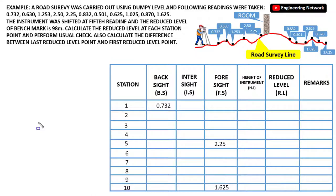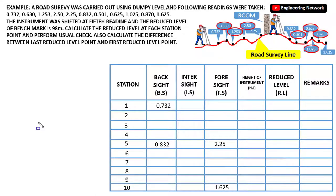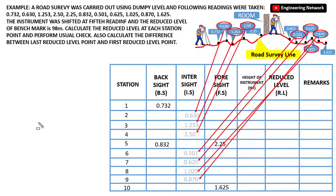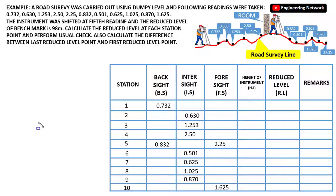The fifth reading will be the fore sight, which is 2.25. After shifting the instrument, again the first reading will be the back sight, which is 0.832, and the remaining readings will be the inter sight. So this is the data given to us in the problem. Now first I will calculate the height of instrument or HI at point 1 with the help of the reduced level of the benchmark.